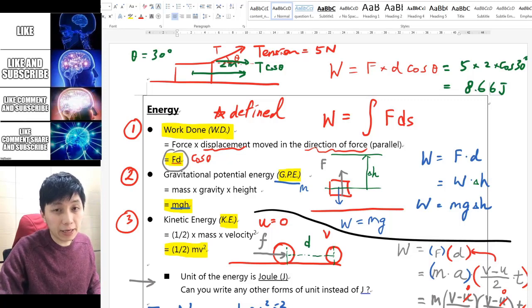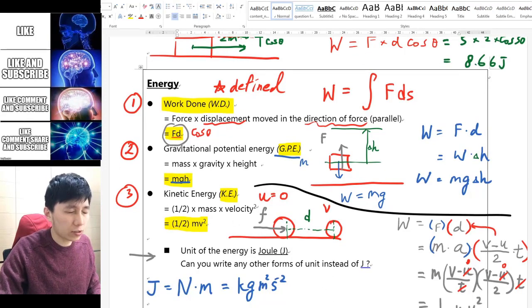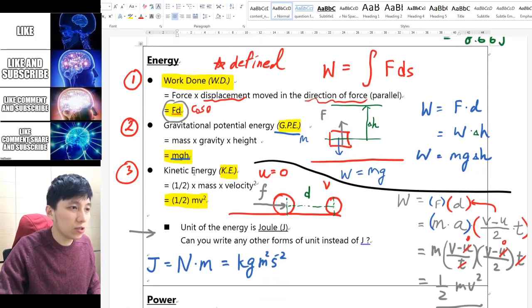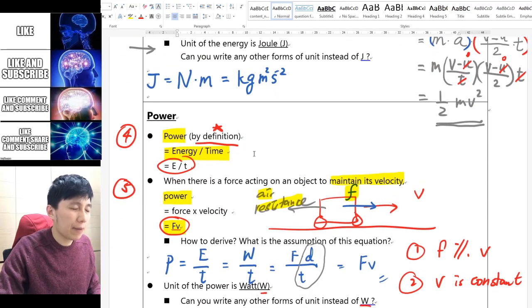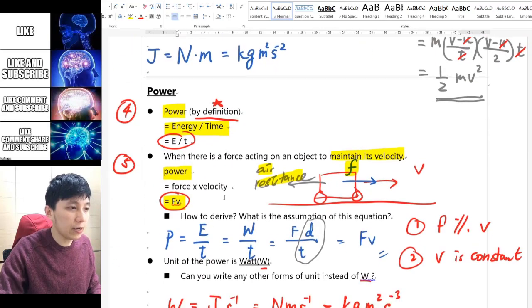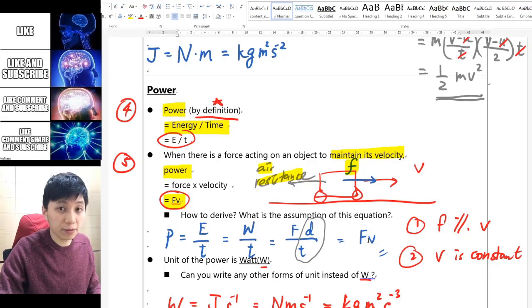Hi, in this video we'll be doing some exercise questions from the past paper using the energy equations that we have learned last time. Let's recall that we have work done equals f times d, GPE equals mgh, KE equals half mv squared, power equals energy over time, and power equals force times velocity.